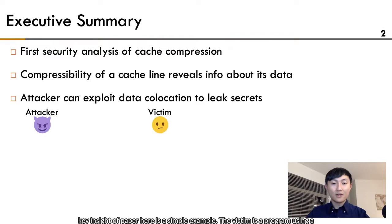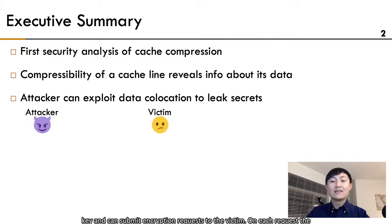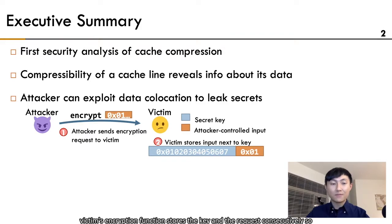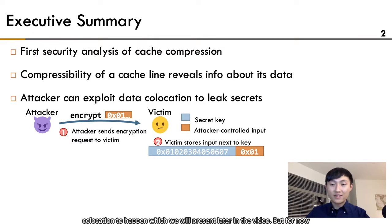To illustrate the key insight in the paper, here is a simple example. The victim is a program using a secret key to encrypt data. The attacker tries to steal the victim's encryption key and can submit encryption requests to the victim. On each request, the victim's encryption function stores the key and the request consecutively, so they fall on the same cache line. There are many possibilities for this collocation to happen, but for now let's just assume they are allocated back-to-back in memory.